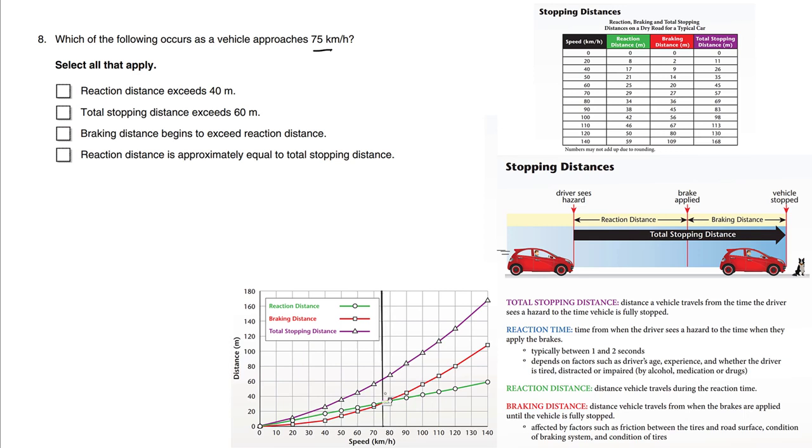Let's just draw a line here and focus on what's happening. The reaction distance, which is green, exceeds 40. So we're talking about the green graph around here. When you look at the number to the side, we're not exceeding 40. In fact, we're under 40, so this is incorrect.